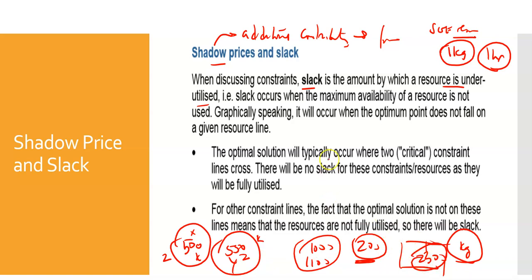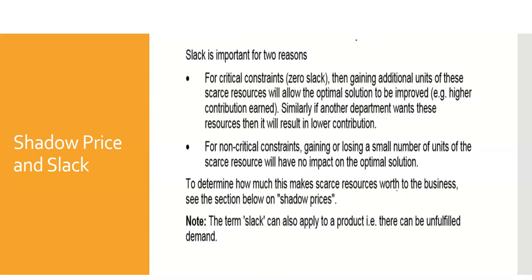Graphically speaking, where the optimal point doesn't fall on a given resource line - of course the optimal solution will typically occur where the two critical constraint lines meet and there'll be no slack as they are fully utilized for those constraints. But for other constraints, the fact that the optimal solution is not on the line means the resources are not fully utilized, so there will be slack.